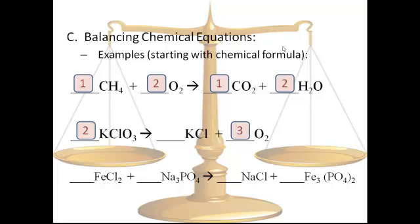Over on the left, I now have two potassiums and two chlorines. So on the right side, double our K and our Cl. Now we're all set. Double-check: two K's on both sides — check. Two Cl's on both sides — check. And six O's on both sides — check.